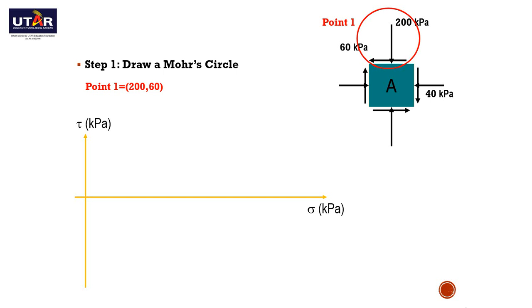For the second point, we look at the plane which is normal to the y-axis. The normal stress on that plane, sigma x, is the x-coordinate for point 2. The direction of stress is towards the element, therefore it is a compression, which is positive in the Moore's circle. The x-coordinate for point 2 is positive 40. The stress parallel to the y-axis, which is the y-directed shear stress on a plane normal to the x-axis, is the y-coordinate for point 2. The direction of the stress forms a clockwise rotation around the element, therefore it is considered a negative value in the Moore's circle. The y-coordinate for point 2 is negative 60. So now we have the coordinate for point 2 as (40, -60).